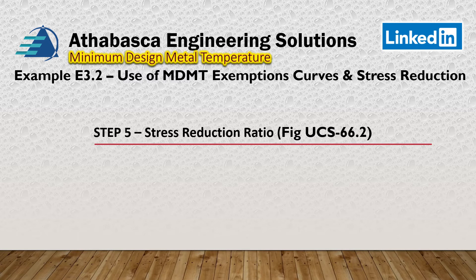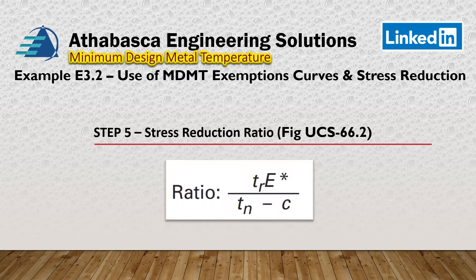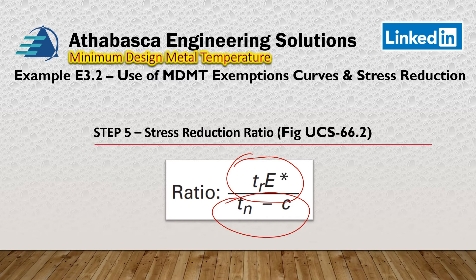In step five, we use the stress reduction ratio from figure UCS-66 part two. Our ratio has T-required on top over the nominal thickness minus the corrosion allowance. If the part is very low stressed, the ratio gets smaller and you get more credit. The lower the ratio, the more credit you can get because the part is less stressed.